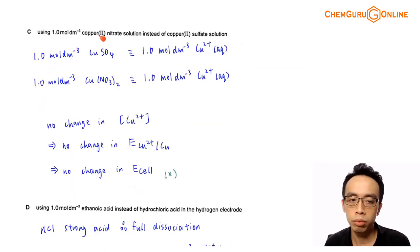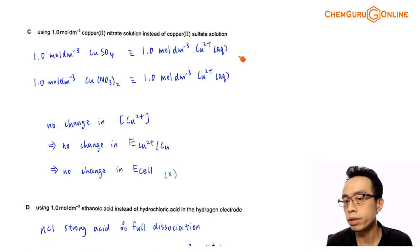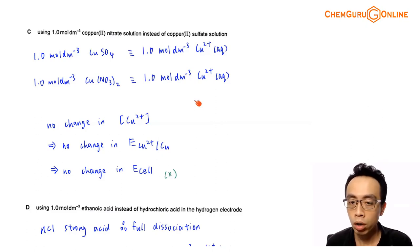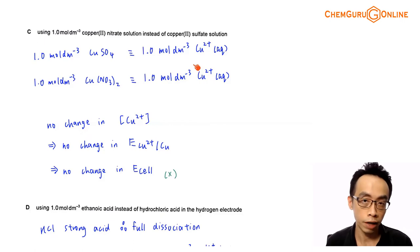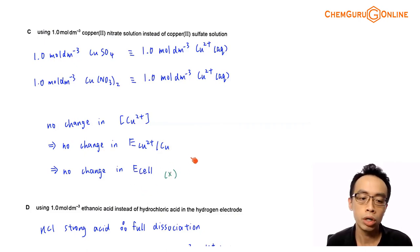Option C: using 1 mol per dm³ copper-2 nitrate instead of copper-2 sulfate. Since copper sulfate is fully soluble, 1 mol per dm³ copper sulfate gives 1 mol per dm³ Cu²⁺(aq). Similarly, 1 mol per dm³ copper nitrate also gives 1 mol per dm³ Cu²⁺(aq) since nitrates are soluble. The concentration of Cu²⁺ is the same in both cases — standard conditions with 1 mol per dm³. There is no change in the position of equilibrium for the copper half-cell, no change in its E value, and therefore no change in E cell. Option C is the wrong answer.